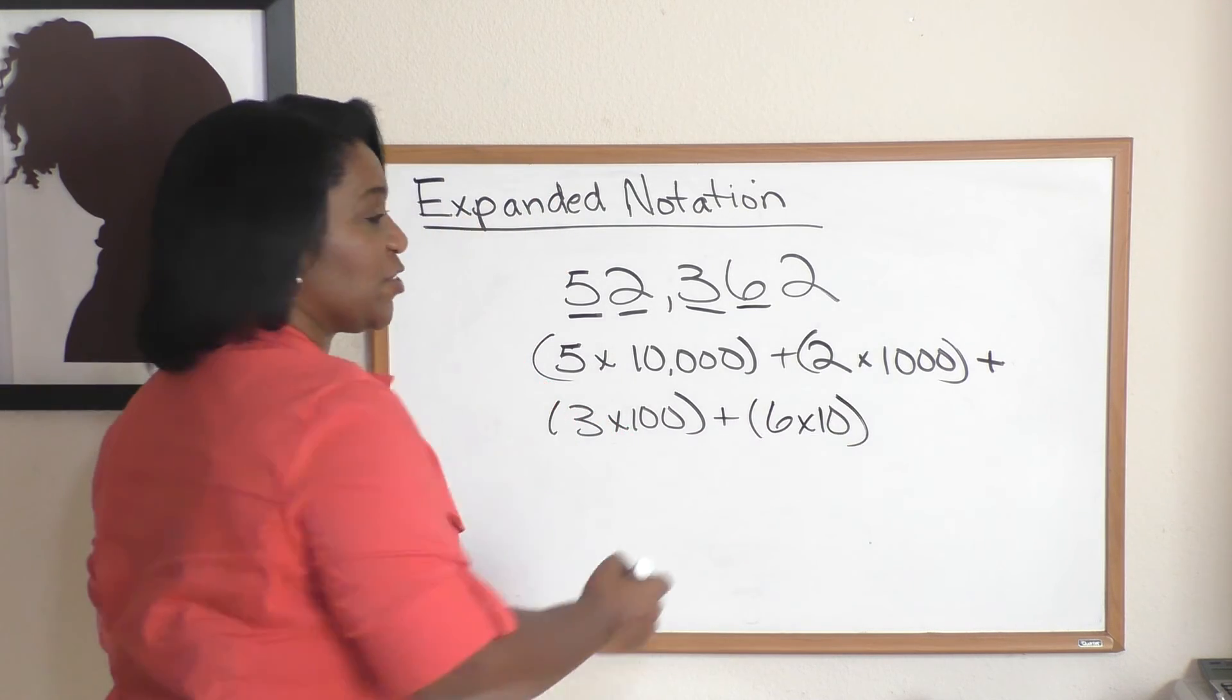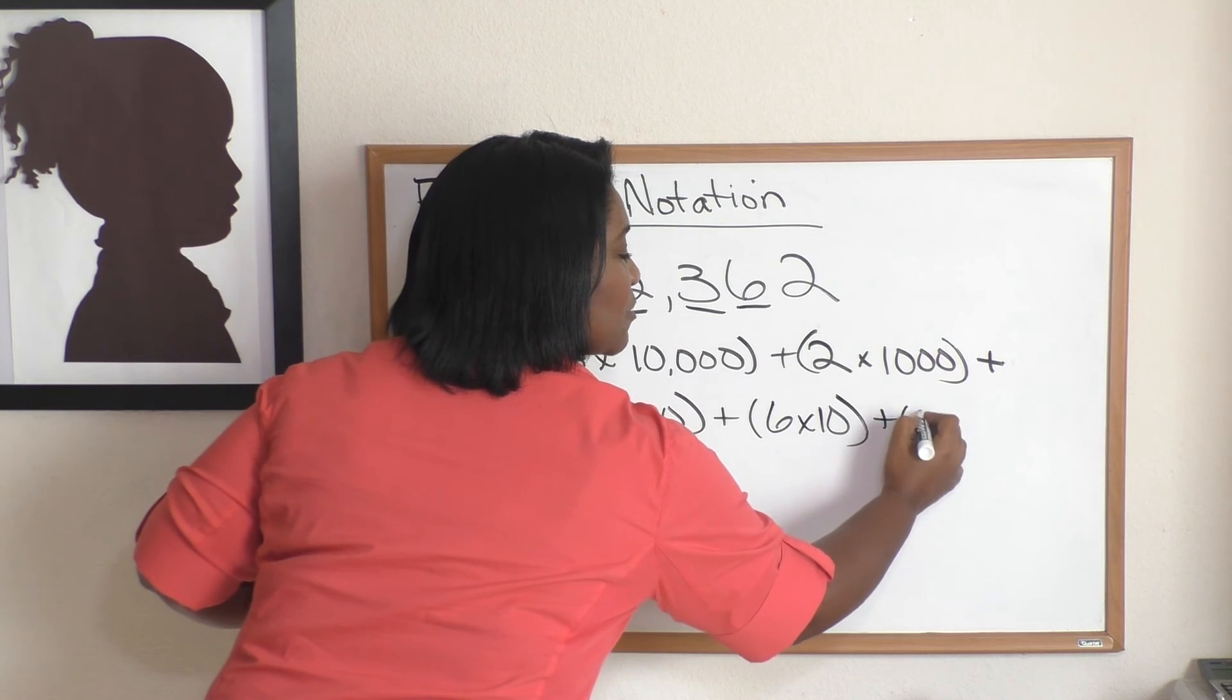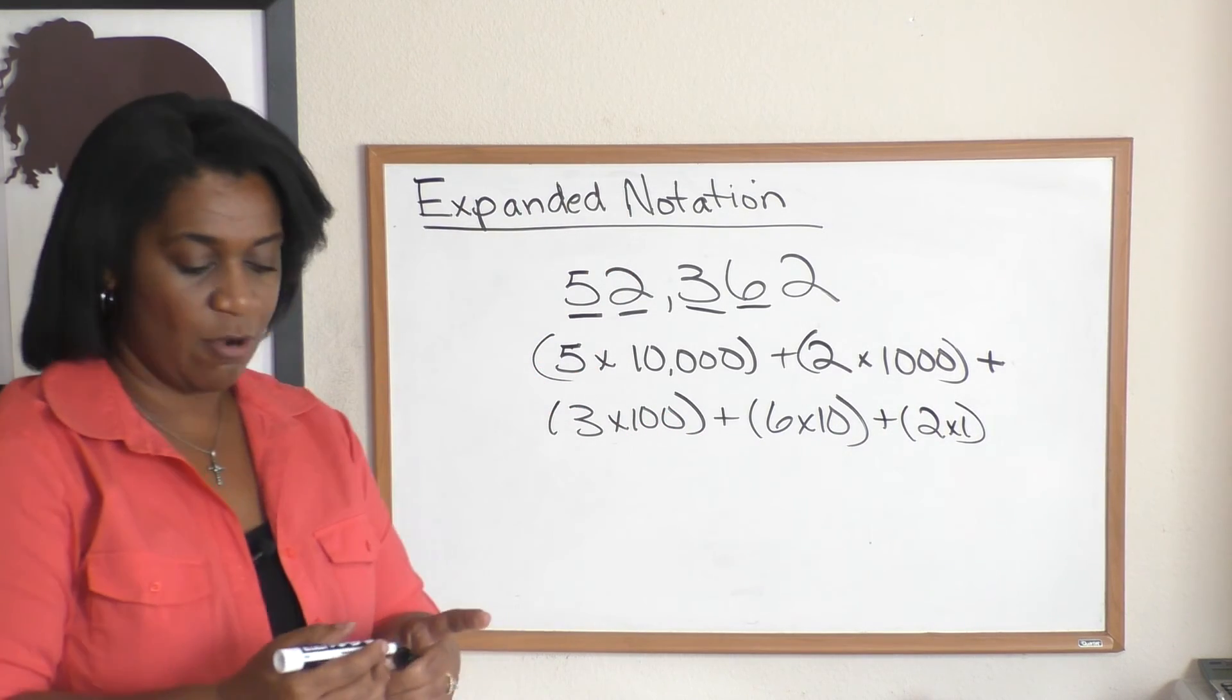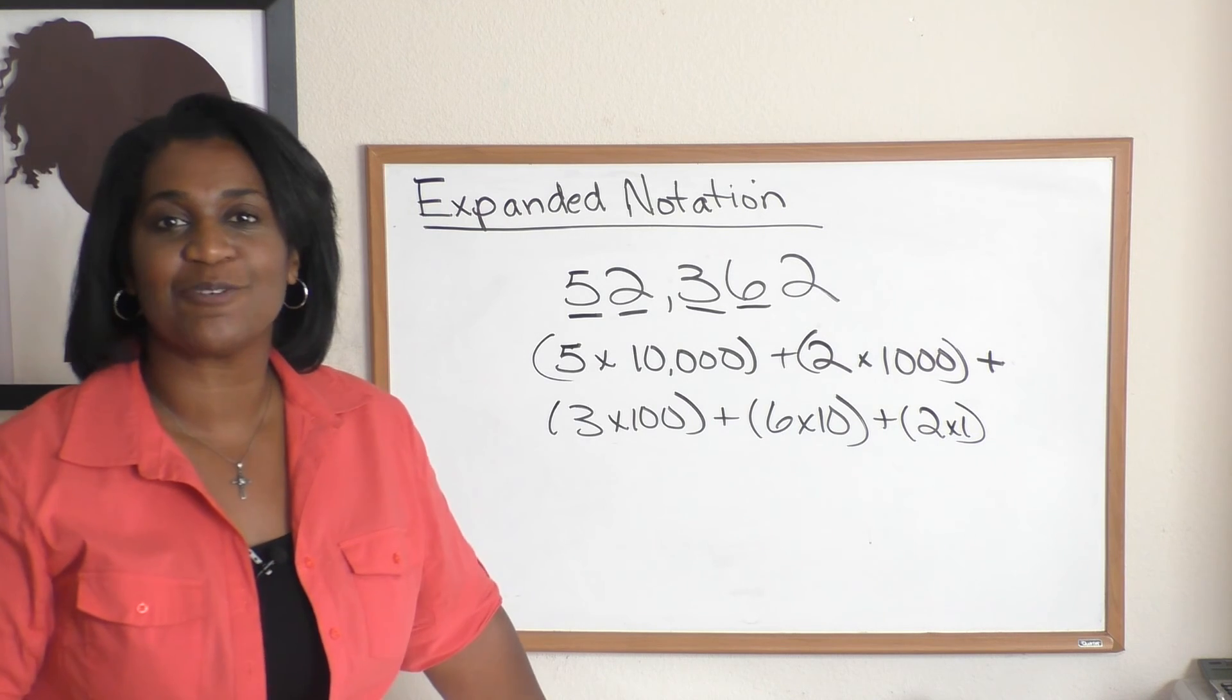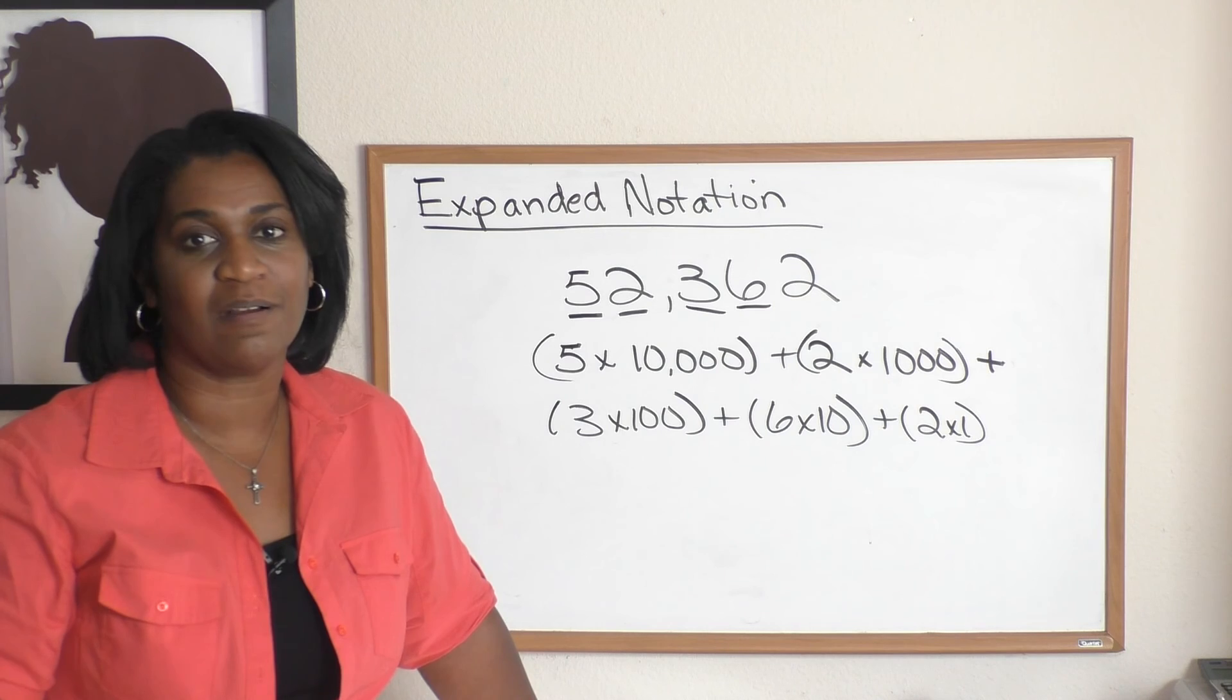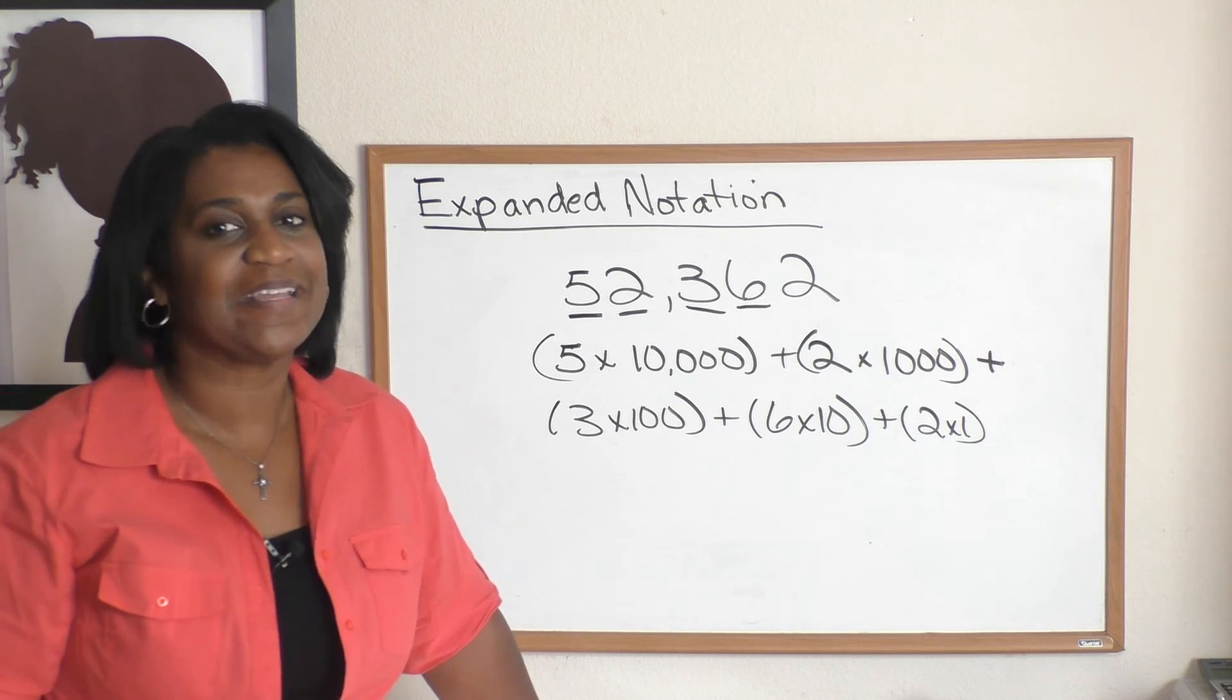And we finish it off with the two, which is plus parentheses, two times one. And there you go. That is your expanded notation. If you can do what I just did for every number, you've got it. It's pretty easy.